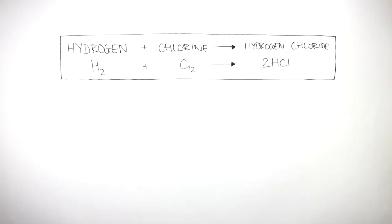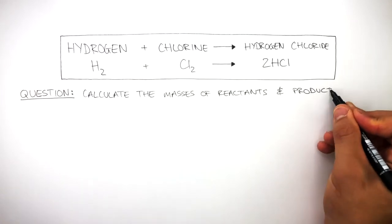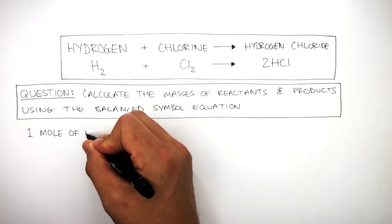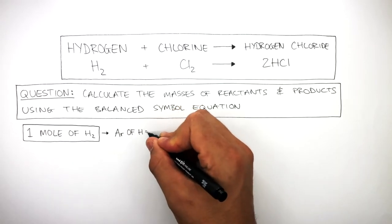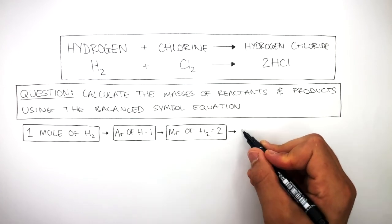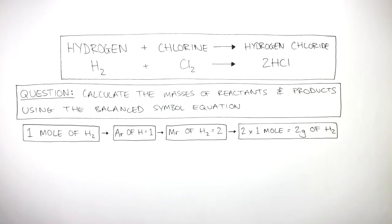Here we have a word and balanced symbol equation showing the reaction between hydrogen and chlorine to form hydrogen chloride. We're going to calculate the masses of reactants and products using the balanced symbol equation. The equation tells us there is one mole of hydrogen molecules, and the periodic table tells us that AR of hydrogen is 1. Because the MR of H2 is 2, this means 2 times 1 mole equals 2 grams of H2.